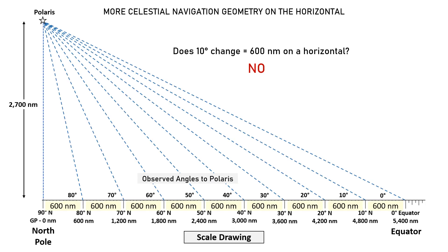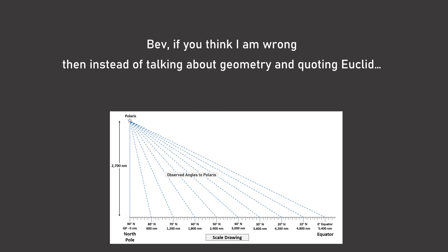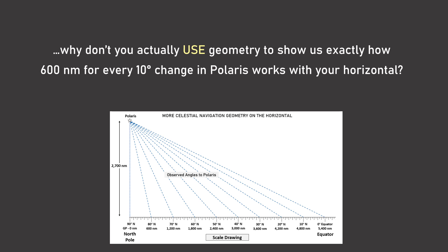So does every 10-degree change equal 600 nautical miles on a horizontal? Absolutely not. So Bev, if you think I am wrong, then instead of talking about geometry and quoting Euclid, why don't you actually use geometry to show us exactly how 600 nautical miles for every 10-degree change in Polaris works with your horizontal?